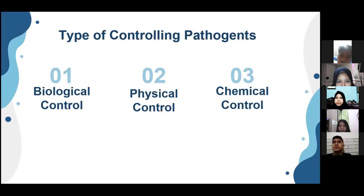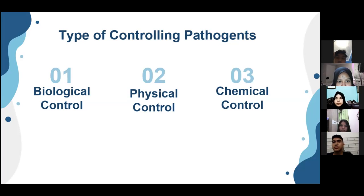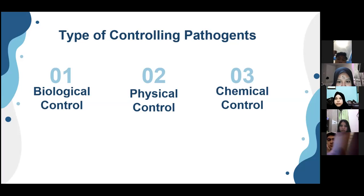There are three types of controlling pathogens: number one is biological control, number two is physical control, and number three is chemical control.